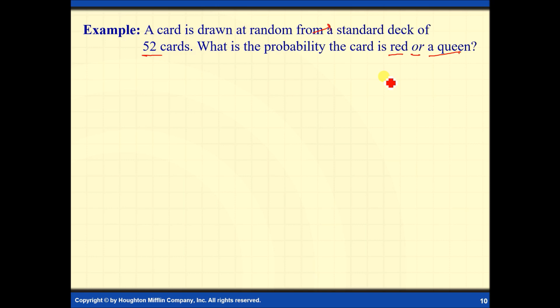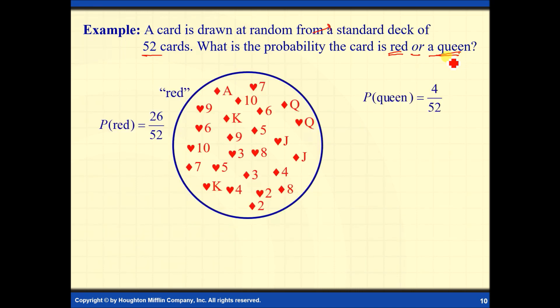Punta tayo sa example na ito. A card is drawn at random from a standard deck of 52 cards. What is the probability that a card is red or a queen? Dito, naka-specify na kukunin natin yung probability that the card could be red or pwede rin queen. Illustrate natin. Kapag red ang ating pinag-usapan, meron tayong 26 cards na pwede mangyari, or the probability of getting the red card is 26 over 52.